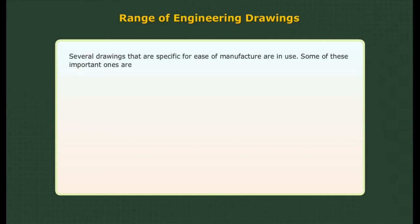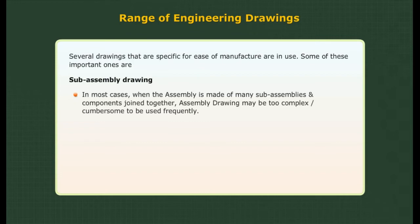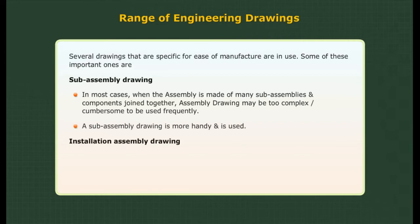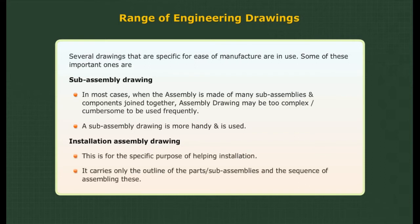Apart from the two fundamental types of drawings, several drawings specific to ease of manufacture are in use. Sub-assembly drawing: in most cases when the assembly is made of many sub-assemblies and components joined together, the assembly drawing may be too complex or cumbersome to be used frequently, so a sub-assembly drawing is more handy and is used. Installation assembly drawing: this is for the specific purpose of helping installation, so it may carry only the outline of the parts or sub-assemblies and a sequence of assembling these.